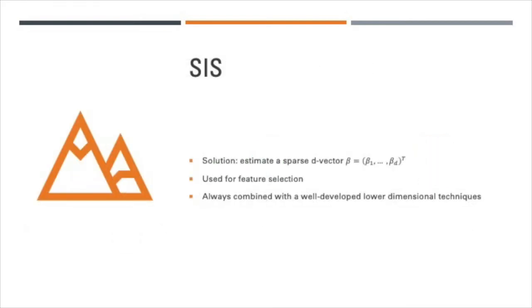The original problem of estimating the sparse p vector beta in a model reduces to estimating a d vector of beta. Here we want d to be strictly less than n. The smaller subset can then be combined with a well-developed lower dimensional method such as SCAD or adaptive lasso or the Dantzig selector.